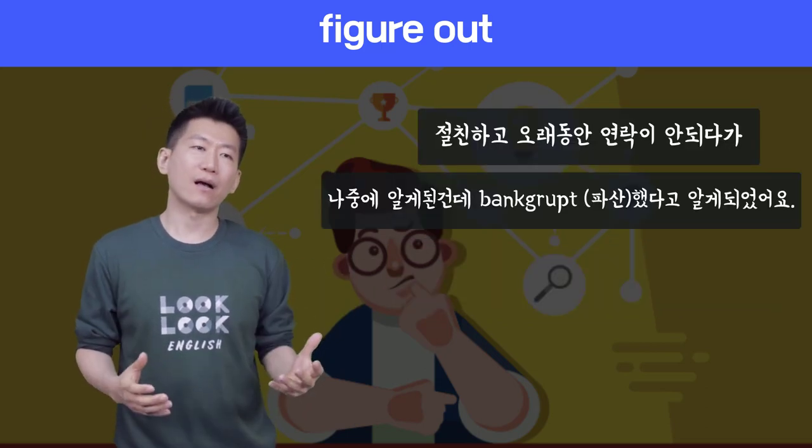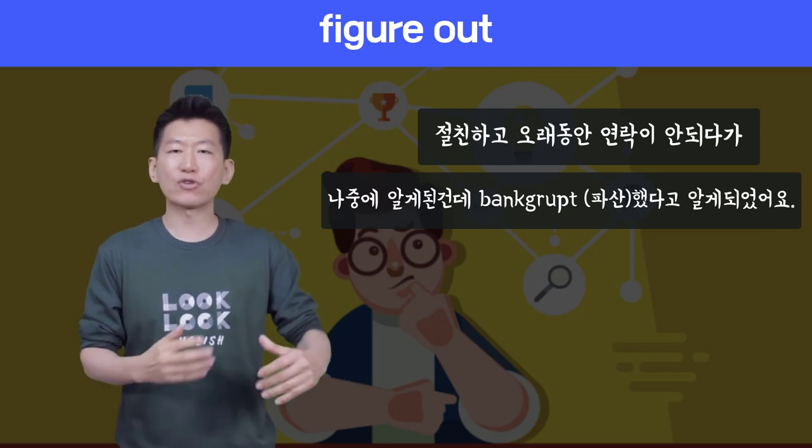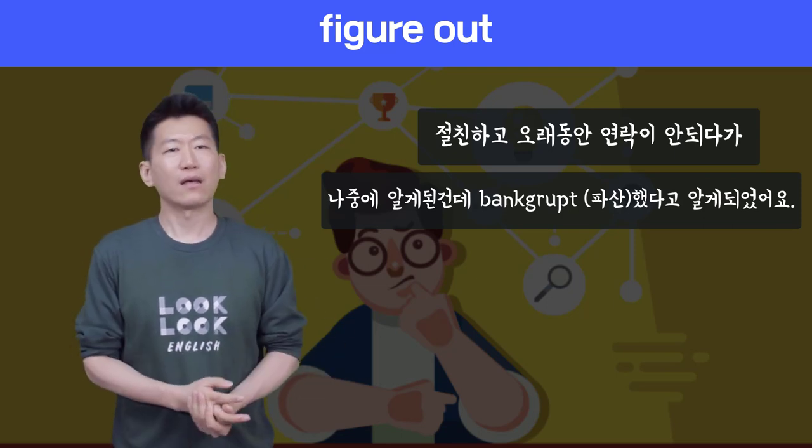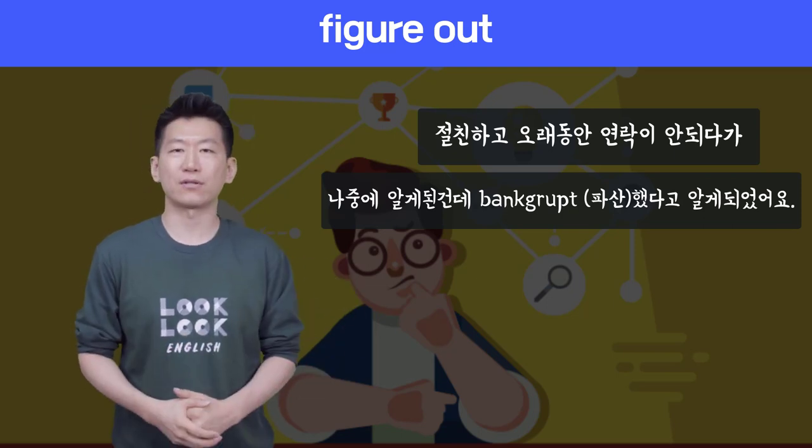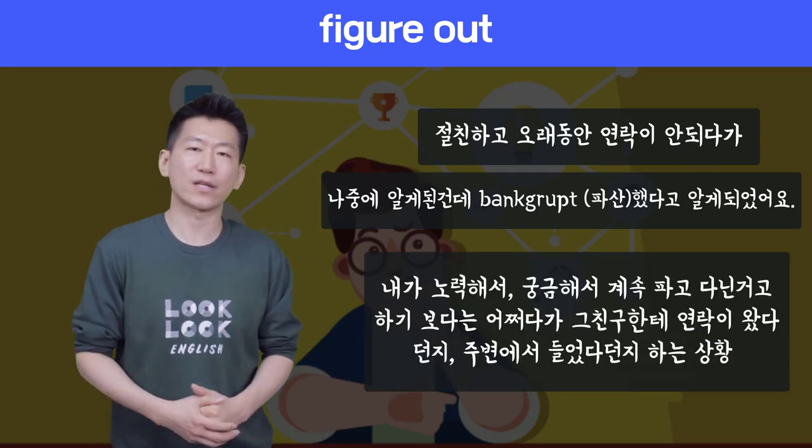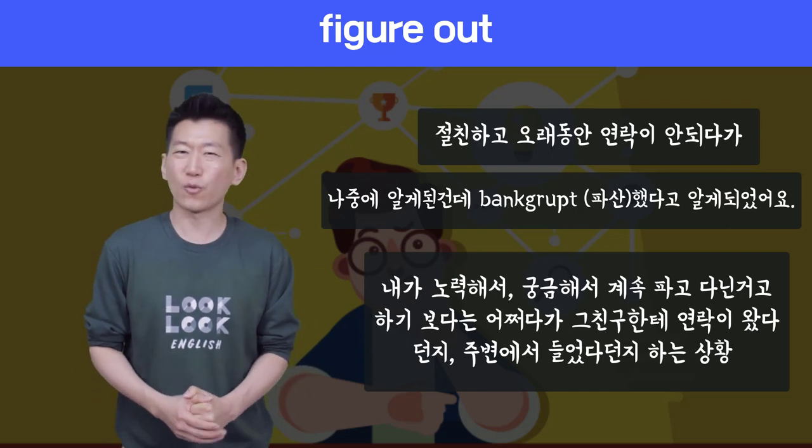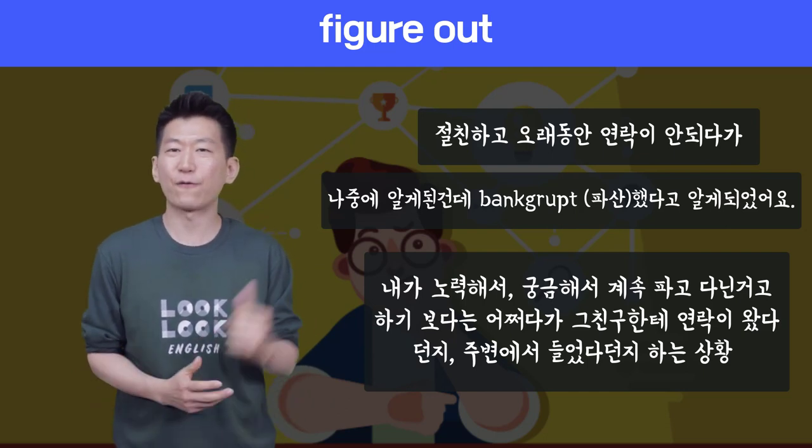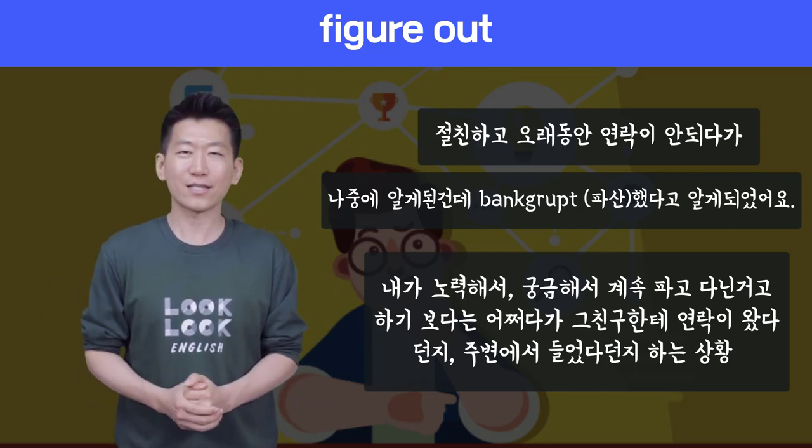근데 제가 그걸 막 노력하려고 한건 아닌데 나중에 보니까 I found out that he went bankrupt. 아 걔가 이제 망했다 라는 걸 알게 되었어요. 그래서 걔가 피하고 있었던 거죠. 근데 나중에 알게 된 거잖아요. 그때는 figure out을 사용하면 약간 좀 어색할 수 있습니다. 아시겠죠. Find out 하고 figure out 차이점도 제가 설명을 드렸죠.